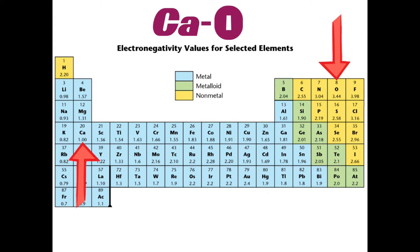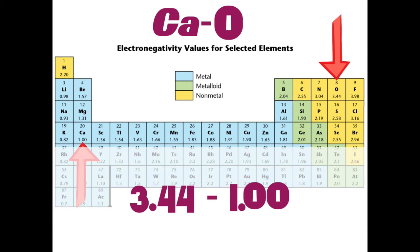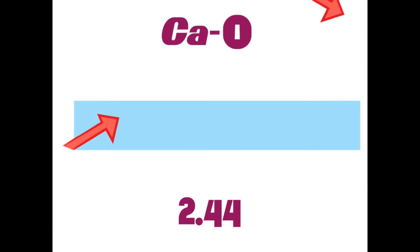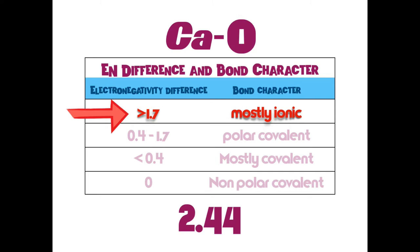Let's look at another example. Let's look at calcium oxide. We're going to do the math here. 3.44 of oxygen minus the 1 of calcium, giving us a difference of 2.44. We go to our chart now. Let's take that value and we know that it is greater than 1.7. So this is an ionic bond.